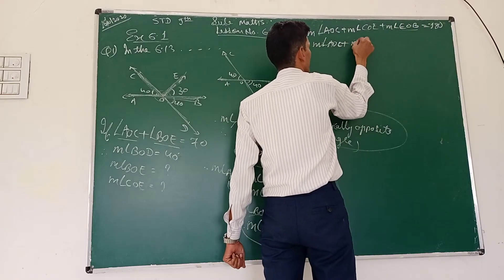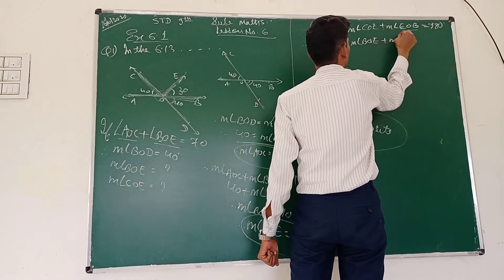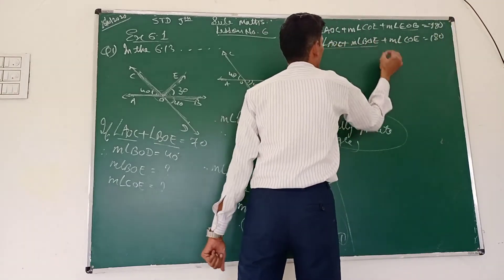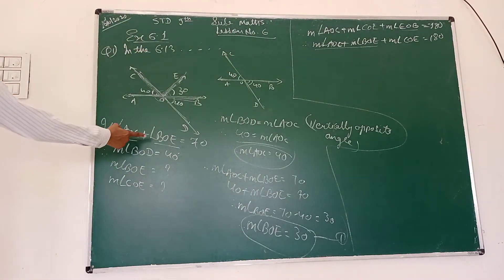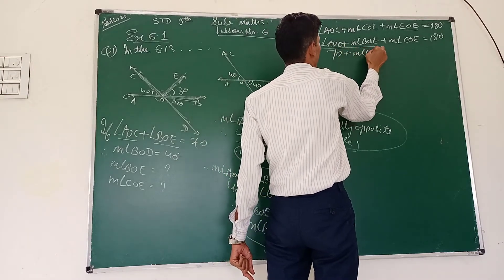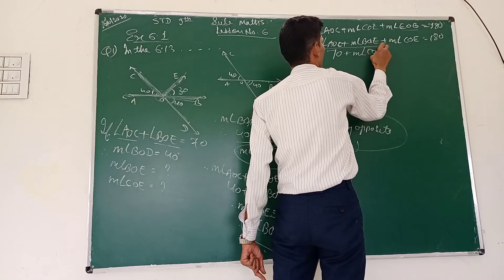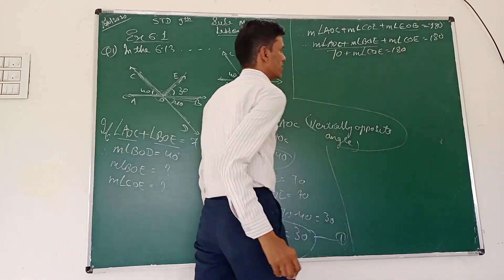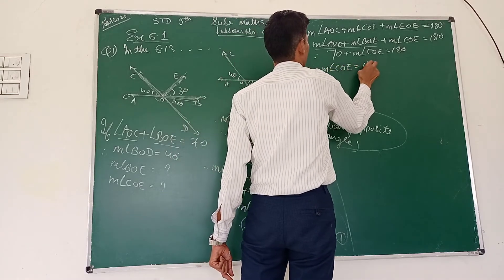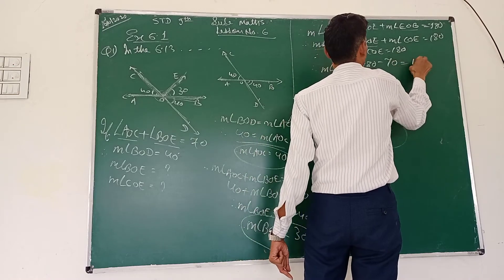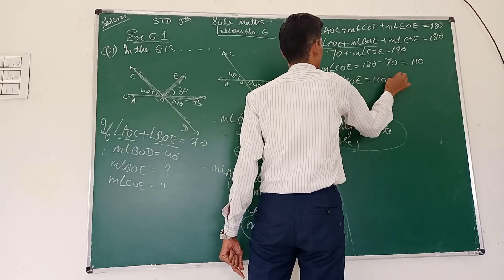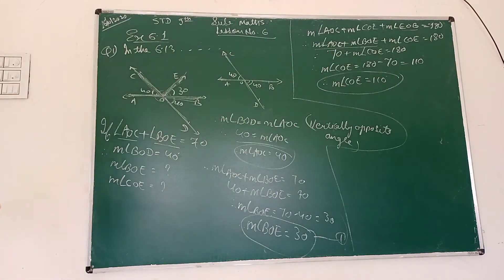Since AOC plus BOE equals 180 degrees on the straight line, substituting the known values: 70 plus angle COE equals 180. Therefore angle COE equals 180 minus 70, which equals 110 degrees.